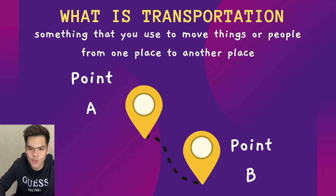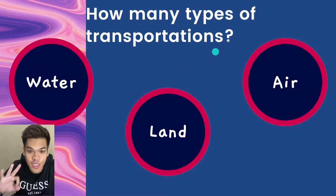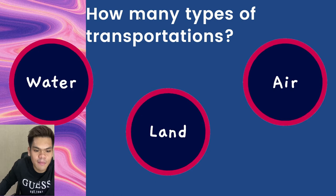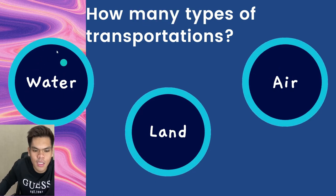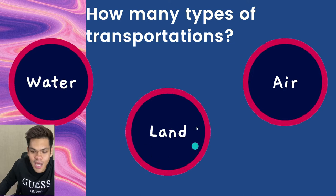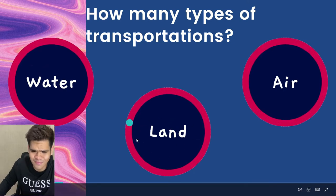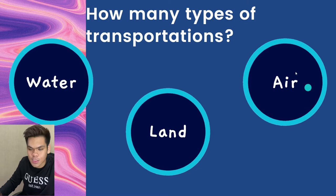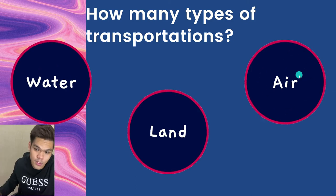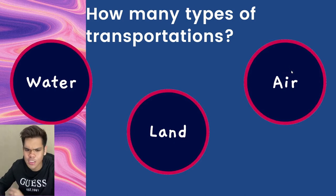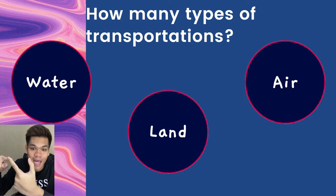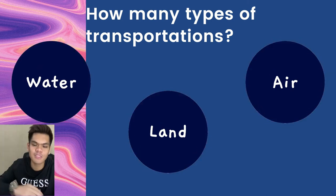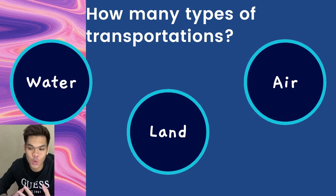Now let's go to the types of transportation. There are three types of transportation. The first type is water transportation, then we have land transportation, and the last one is air transportation. So basically, tiga jenis pengangkutan: pengangkutan air, pengangkutan darat, and pengangkutan udara.